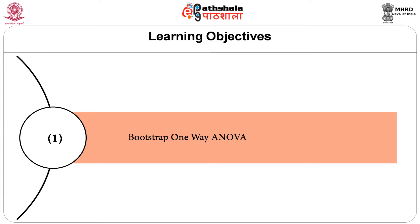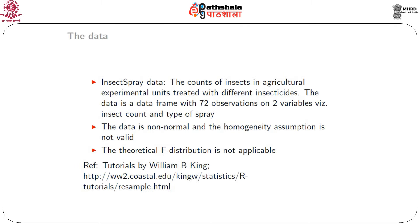Bootstrapping a One-Way ANOVA: this material is based on the tutorial of W. B. King, with the website given below. The one-way ANOVA assumes that the data comes from a normal distribution and also assumes homogeneity of variance. If homogeneity of variance is not present, then we cannot apply the theoretical F distribution.